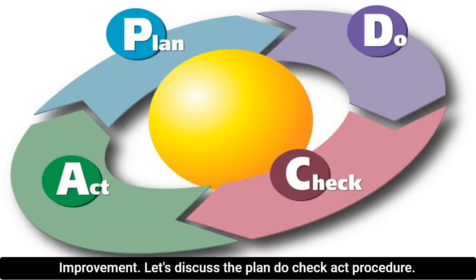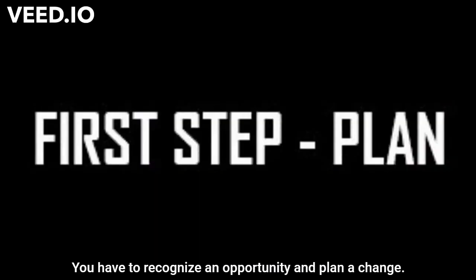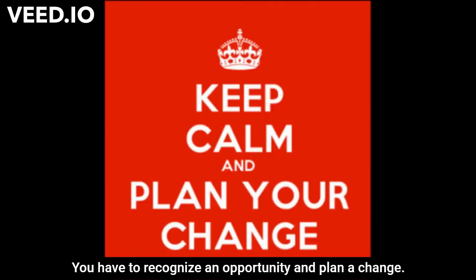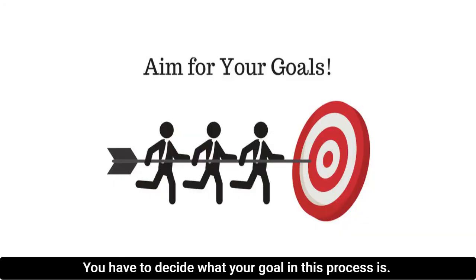Let's discuss the Plan-Do-Check-Act procedure. The first step is Plan — you have to recognize an opportunity and plan a change. You have to decide what your goal in this process is.